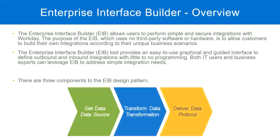What we are going to do is configure these three steps. First — get data: where are we going to get the data from? That is something we have to configure. Second — do we need transformation? If yes, configure it; if no, leave it blank. Third — deliver the data: how are we going to send it to an external system? Once we configure these three steps, our EIB is ready and we can start exchanging information from Workday with an external system.